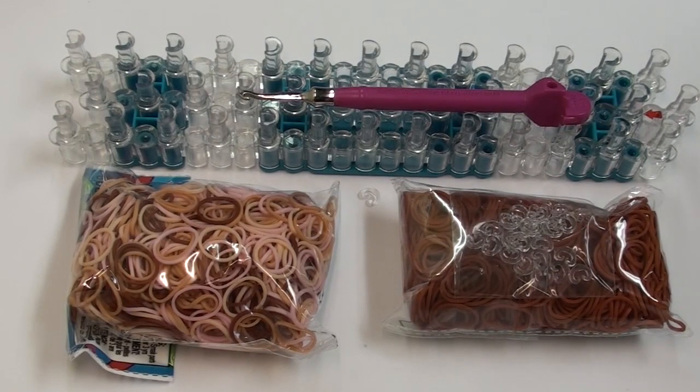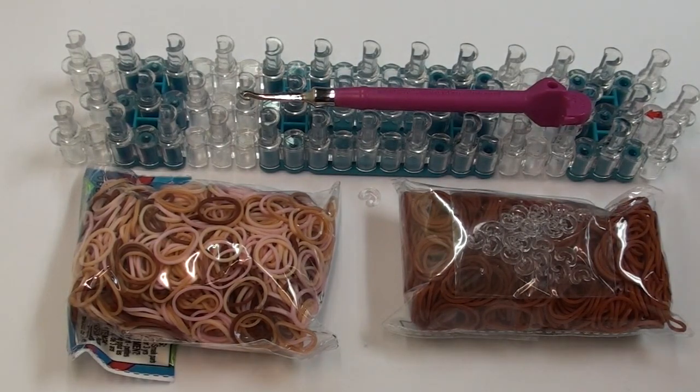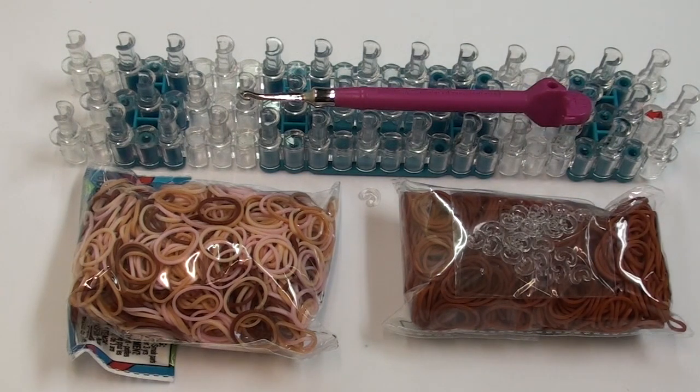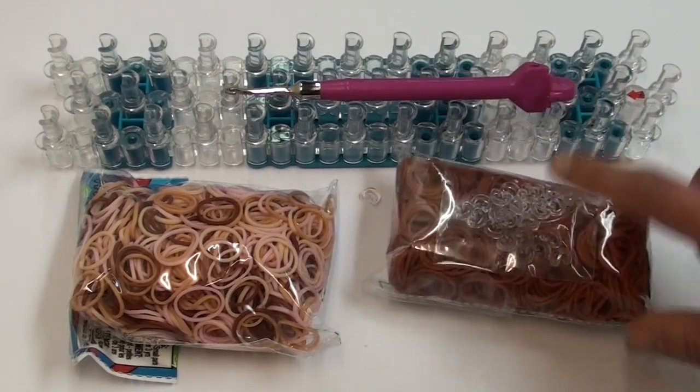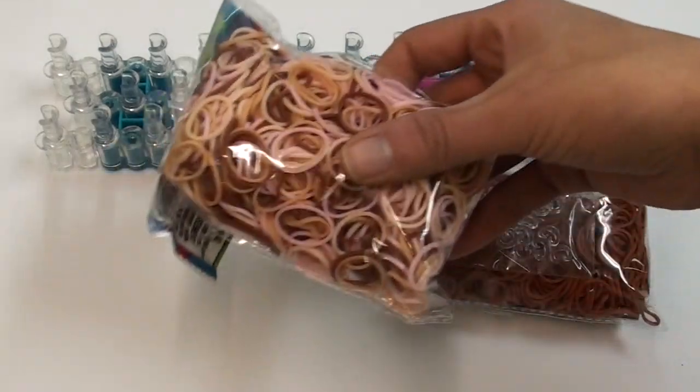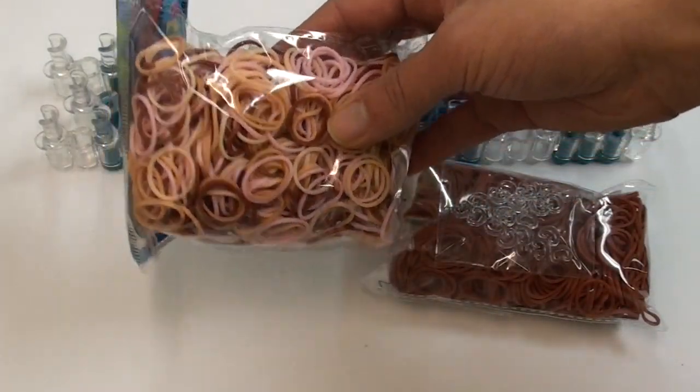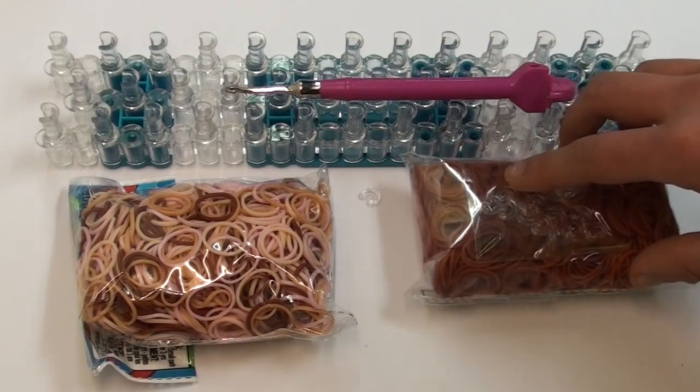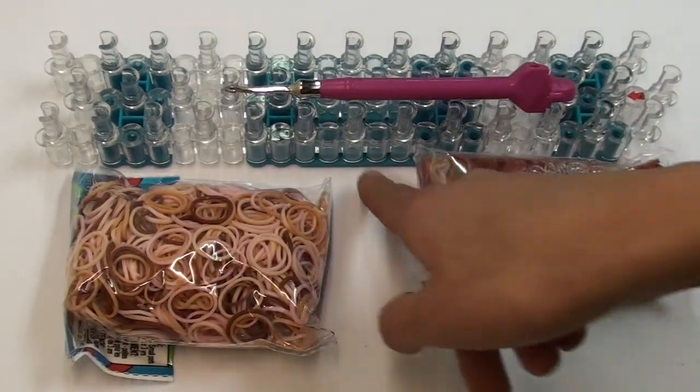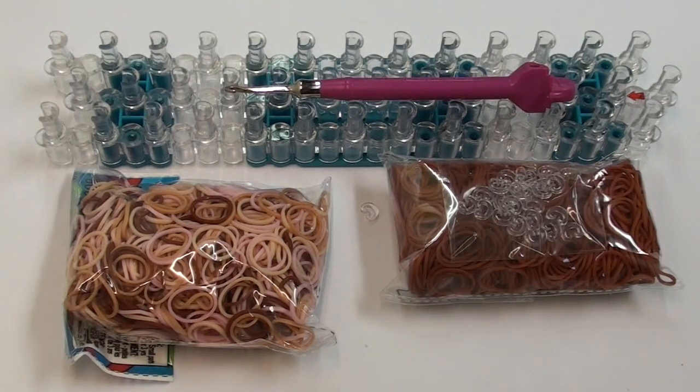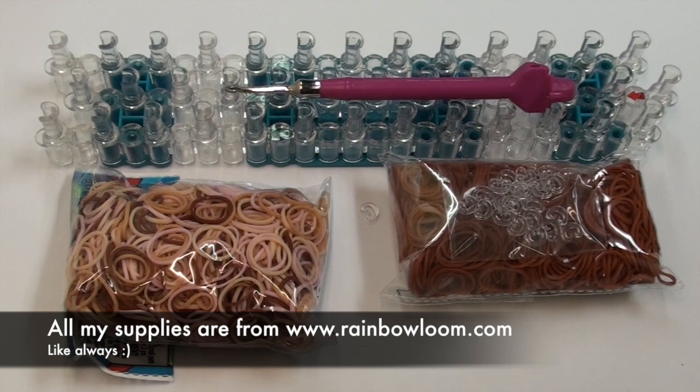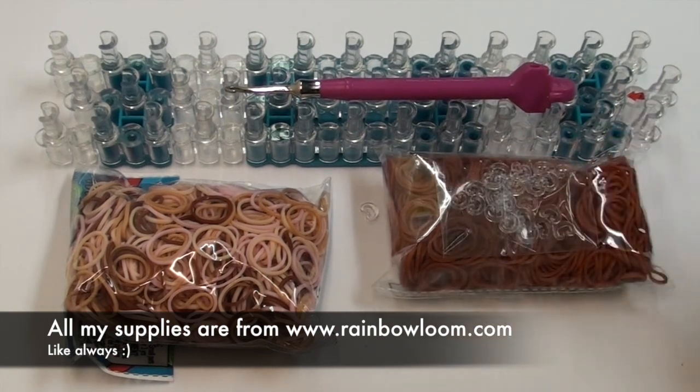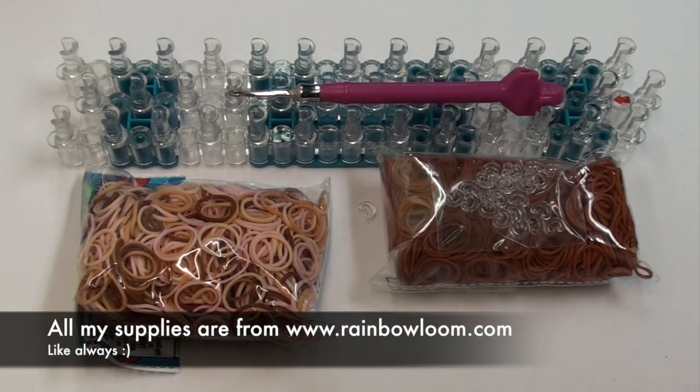So today you will need your loom, your hook, and any colored bands that you like. For a realistic looking pretzel I recommend using some kind of brown tone band. Here I have Caramel from the Rainbow Loom Web Store. Or you can also use bands from their mixed skin tone package. Or you can use brown bands, which Rainbow Loom currently doesn't have. Or burgundy bands, which is pretty much a brown, and that's more of a darker brown than Caramel. And so now without further ado, we can now get started.